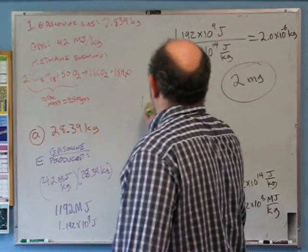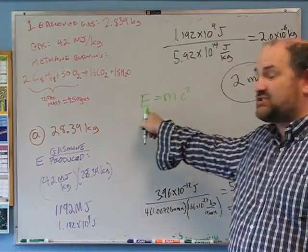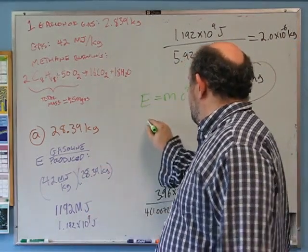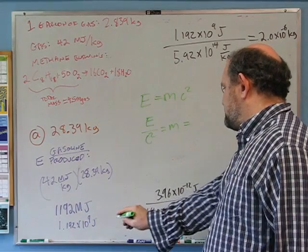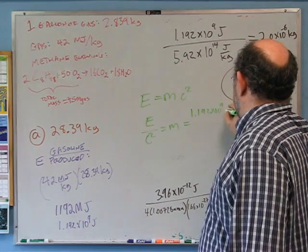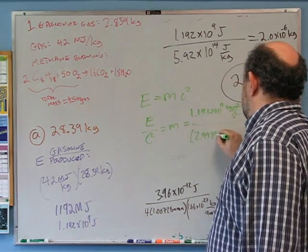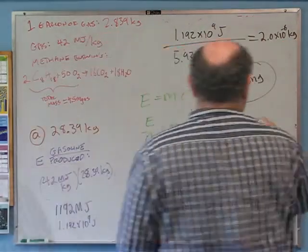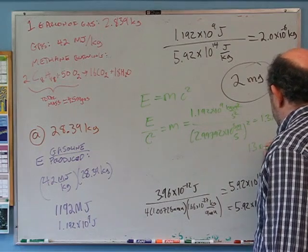For matter-antimatter, the efficiency is 1 — you convert all mass to energy. So E = mc², meaning E/c² equals the mass you need. Mass = 1.192×10⁹ J ÷ (2.99792×10⁸ m/s)² = 1.3×10⁻⁸ kg, or 13 nanograms of matter plus antimatter to drive your car as far as a 10-gallon tank.